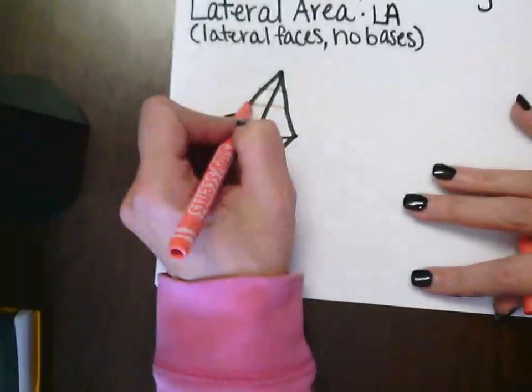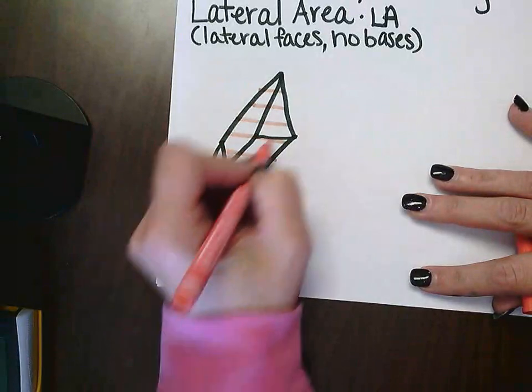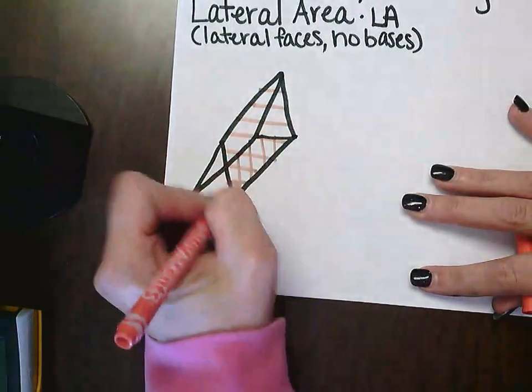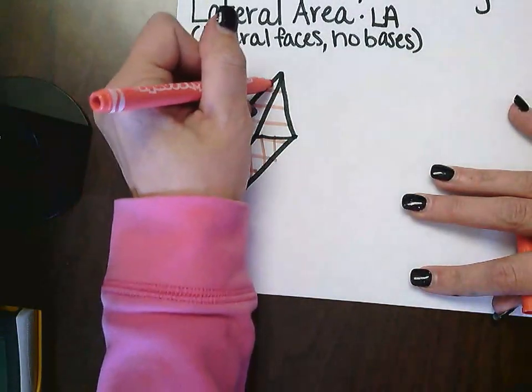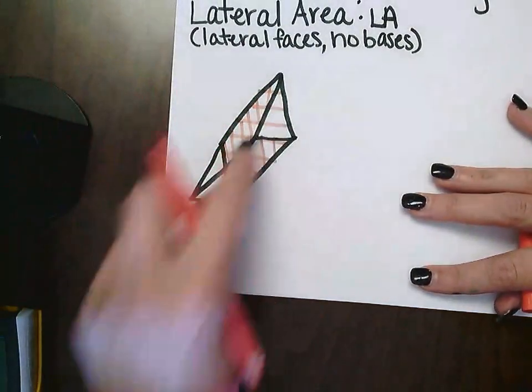With lateral area, it will be all the things other than the triangle, so the sides and the bottom, and then of course this side over here which is kind of hard to see. But not the two triangles—the two triangles are our bases.